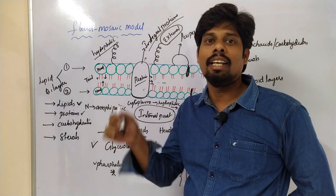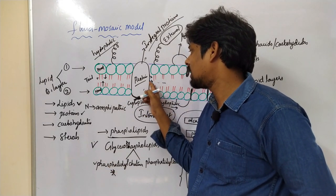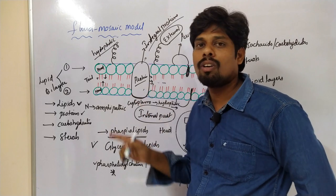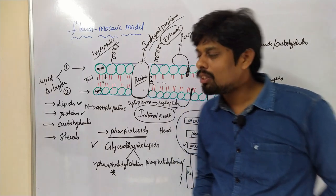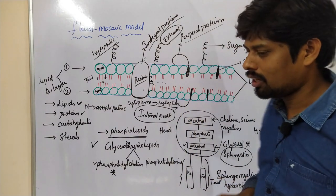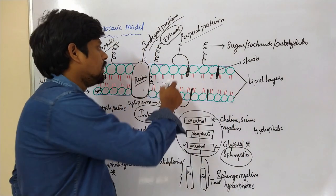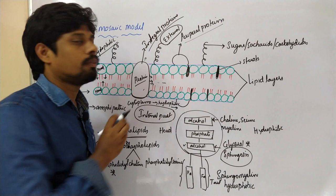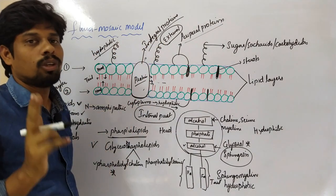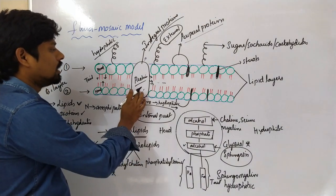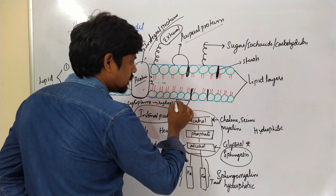Integral proteins are integrated into the plasma membrane because they contain hydrophobic amino acids, so they are embedded. The second type is peripheral proteins — proteins that are not involved in depth of the plasma membrane. These peripheral and integral proteins are the two types of proteins present in the plasma membrane.